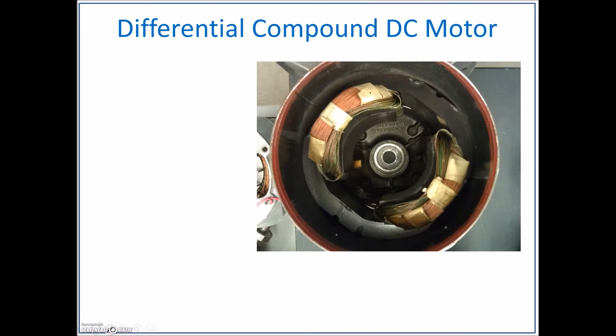All right guys, in the previous video we were looking at the cumulative compound DC motor where we had the series winding in line with our armature. We had S1, S2, A1, A2, and in addition to that we had our shunt field connected right across the source.